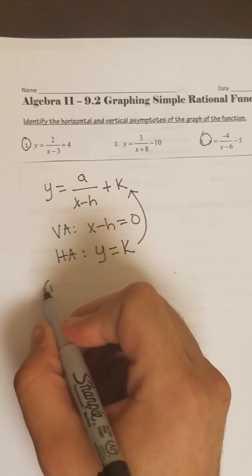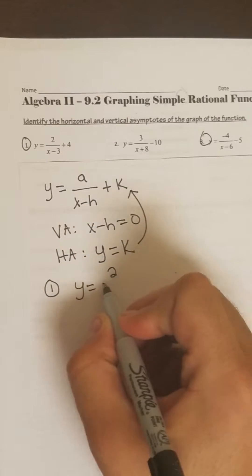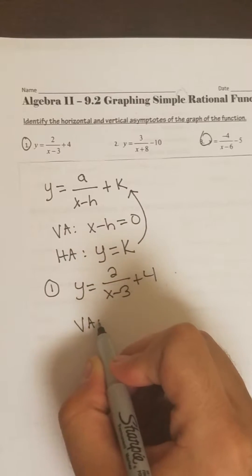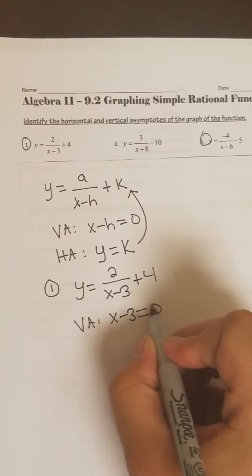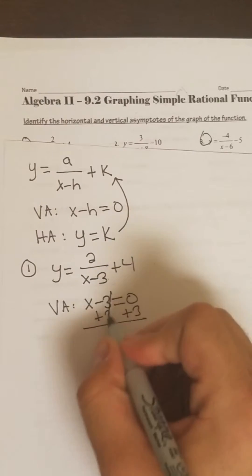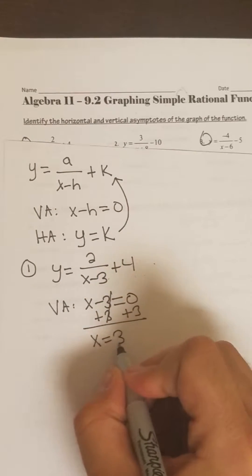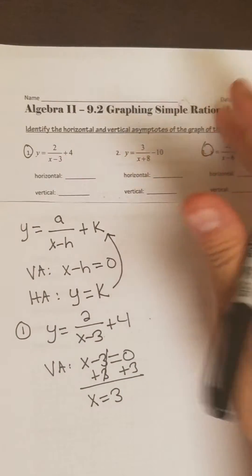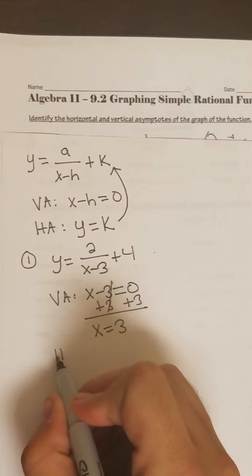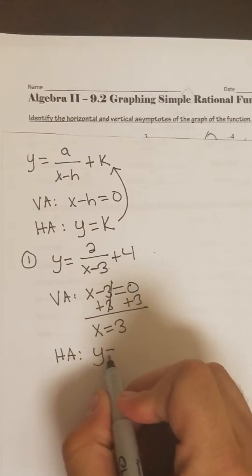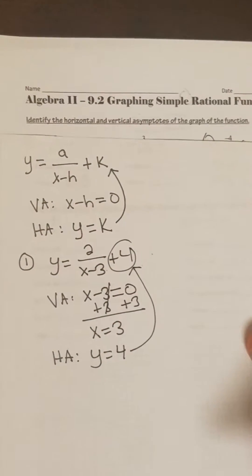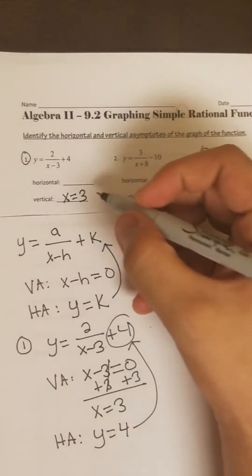So let's go ahead and do the first one. For our vertical asymptote, set the denominator to 0 and then we solve. We got plus 3 on both sides, so we get x equals 3. That's our vertical asymptote. To find our horizontal asymptote, we set y equal to our k value — here that's my k value — so my y is equal to 4. So that's it for that problem.